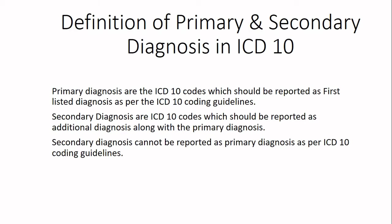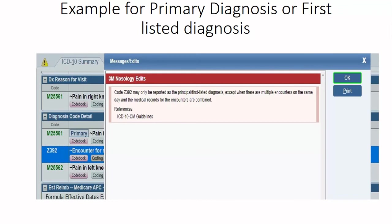Let us check some examples. Here in 3M, when I have coded Z39.2, an encounter code, 3M is giving me an error that code Z39.2 may only be reported as principal or first-listed diagnosis only — with an exception when there are multiple encounter codes on the same day and the medical records for the encounters are combined. Here there are no other encounter codes, so Z39.2 should be reported as principal or first-listed diagnosis.